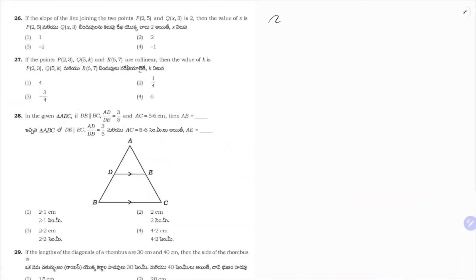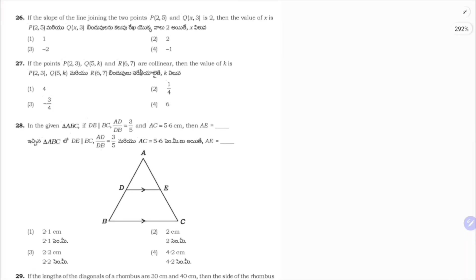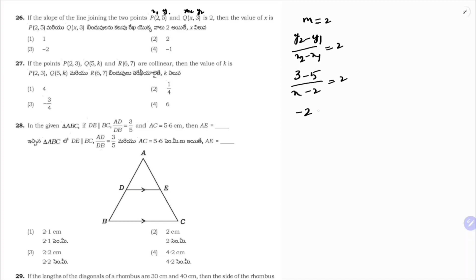If the slope of the line joining P(2, 5) and Q(x, 3) is 2. Slope = (y₂ − y₁)/(x₂ − x₁): 2 = (3 − 5)/(x − 2) = −2/(x − 2). So −2 = 2(x − 2), giving −1 = x − 2, so x = 1. Correct option is 1.